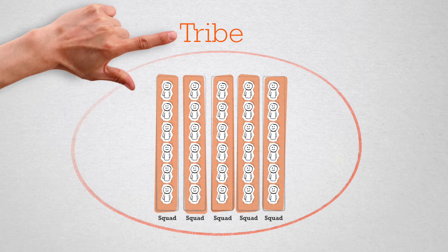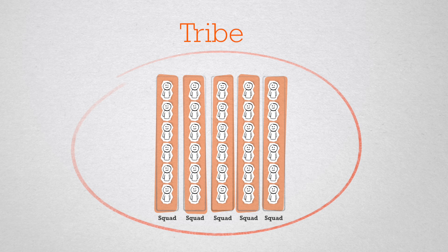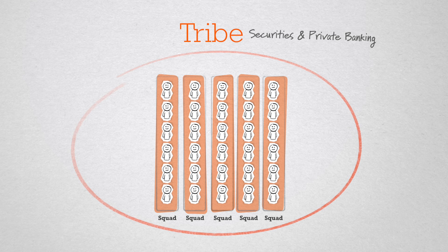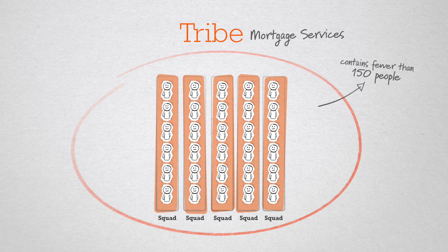A tribe is a collection of squads with interconnected missions. There is a tribe securities and private banking, a tribe mortgage services, etc. As a rule, a tribe contains fewer than 150 people.